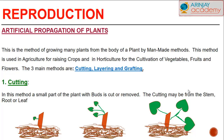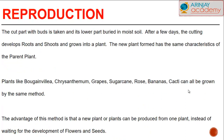In the cutting method, a small part of the plant with buds is cut or removed. The cutting may be from the stem, root or leaf. You could have a look at the diagram to see what exactly is transpiring. The cut part with buds is taken and its lower part buried in moist soil. After a few days the cutting develops roots and shoots and grows into a plant. The new plant formed has the same characteristics as the parent plant.